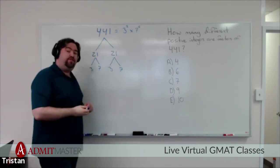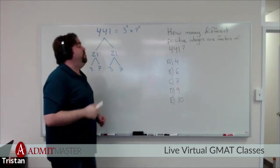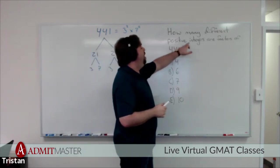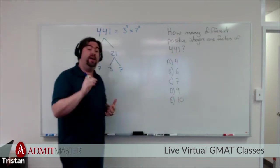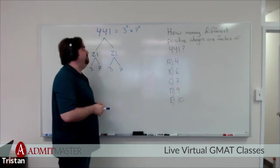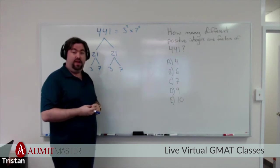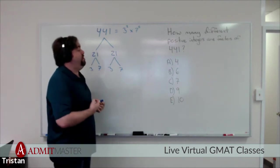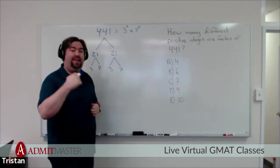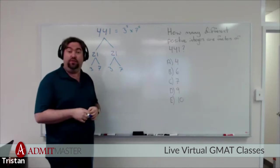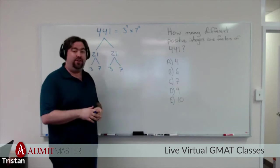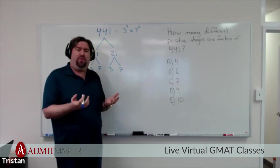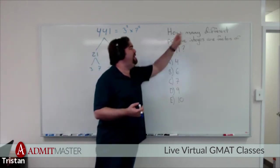But this just gives you the prime factorization. The question is asking how many positive integers are factors. How many regular factors does this question have? Now, we could actually figure out every single factor if we wanted to by multiplying our prime factors here together in different combinations. But we don't really want to do that. I just want to know how many of them there are.